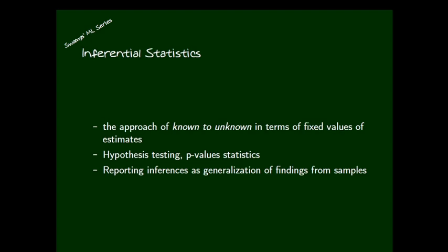The next stage is inferential statistics. In this area we try to generalize what we perceive through descriptive statistics. For example, we know the mean of the sample is 20.3, then we check whether this sample mean can be extended or generalized to the population mean. Inferential statistics is considered an approach from known to unknown — we start from the known values, the estimates of the sample, then move on to the unknown parameters of the population.